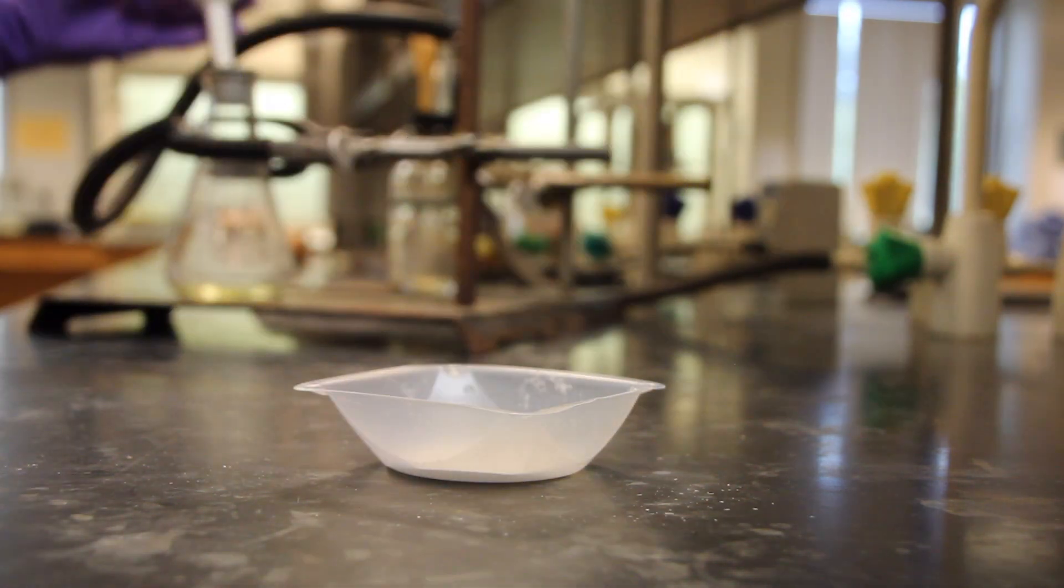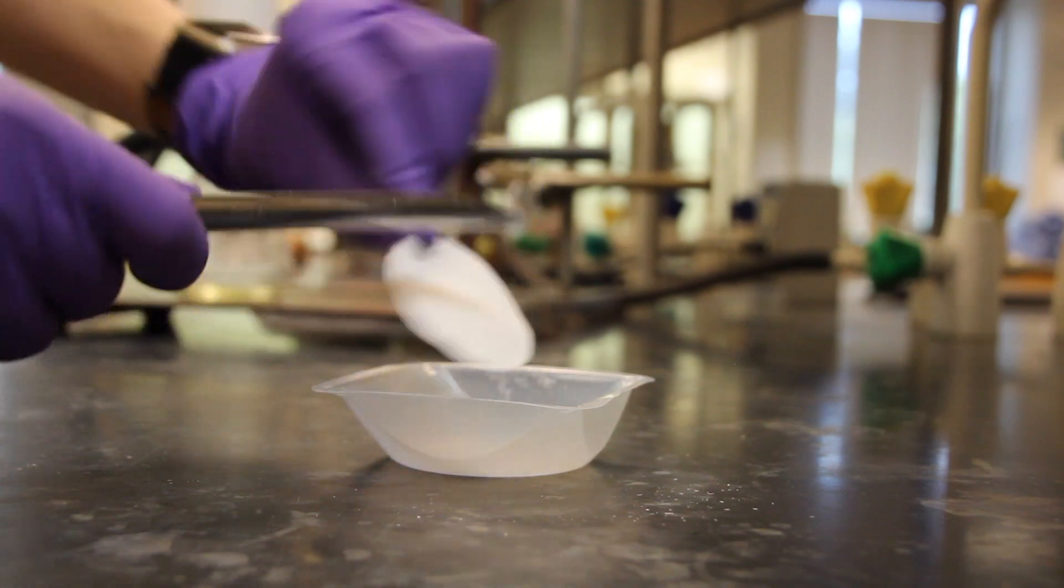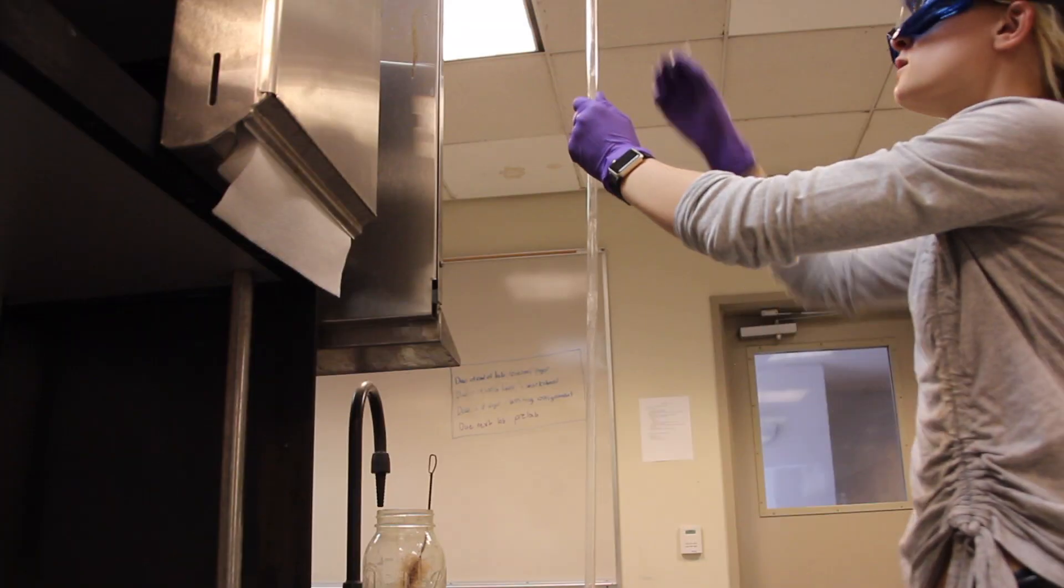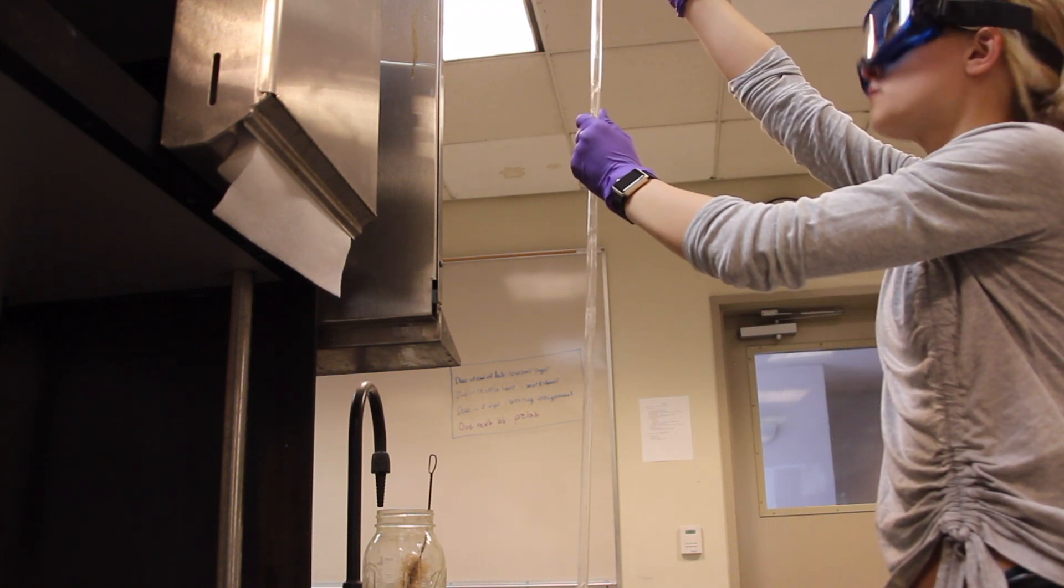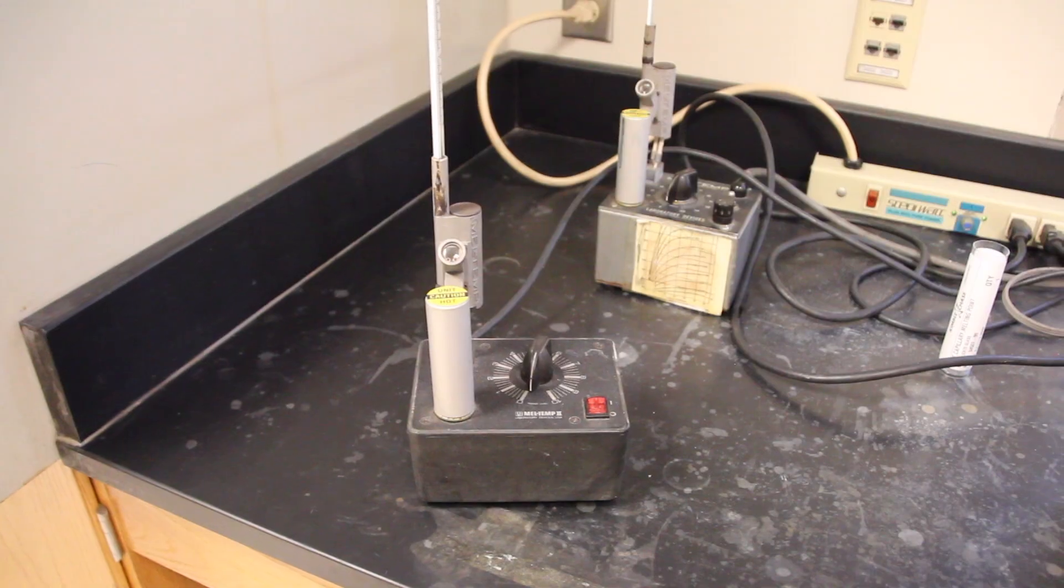To obtain a melting point for your recrystallized product, begin by preparing a sample in a capillary tube. A melting point apparatus can then be used to visualize the melting point of the product.